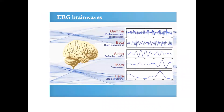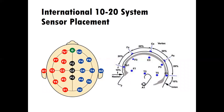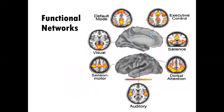Neurofeedback, of course, we had a bit of a grounding in last week when we learned about EEG. Neurofeedback uses EEG to essentially help a person to develop a kind of training to be in a certain brainwave state. So we'll revisit the EEG brainwaves from last class, and then we'll be looking at some of the frequency bands and what they mean, the placement on the scalp and what each of the regions kind of means. And then we'll learn about amplitude, phase coherence, and power in neurofeedback, and functional networks that are often evaluated in neurofeedback.